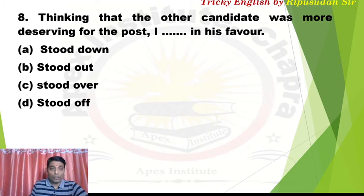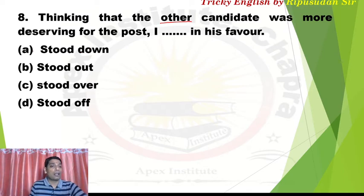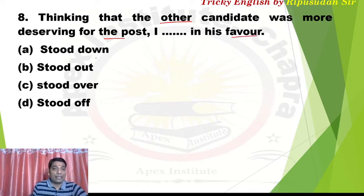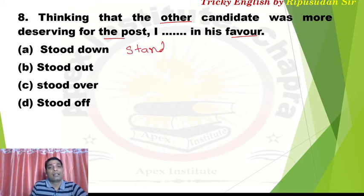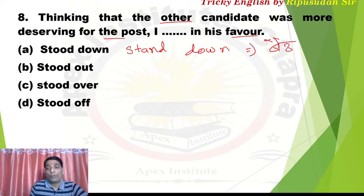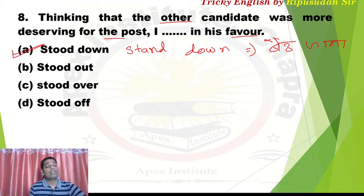Question 8: 'Thinking that the other candidate was more deserving for the post, I dash in his favor.' I dashed in his favor thinking the other candidate was more deserving. 'Stand down' means to step back — like in elections when someone has filed a nomination but later steps aside in support of someone else. That stepping aside is 'stand down'. Answer is 'stood down' — I stood down in his favor.